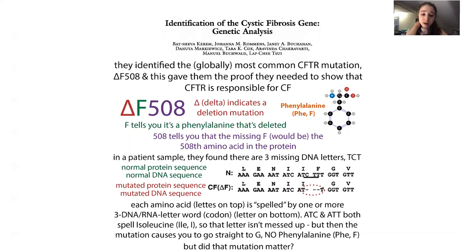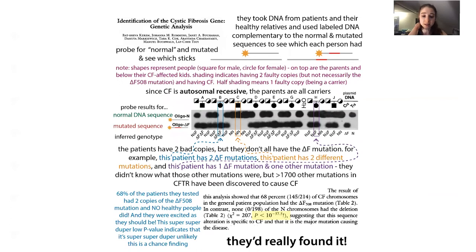They were able to narrow it down to one specific mutation. There are different mutations in this gene that can cause cystic fibrosis, but they found this classic mutation delta-F508 — it's missing the amino acid phenylalanine at that position. They were then able to do genetic analysis to confirm they had really found it. This discovery then enabled a lot of reverse genetics work to really figure out why that mutation causes that effect.